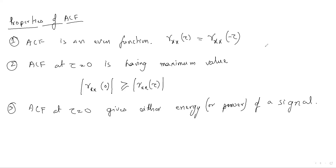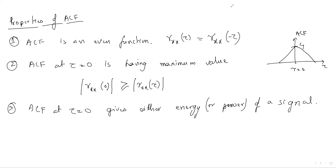An important point is that at τ=0, the autocorrelation function gives the energy or power of the signal. For example, if a plot of the autocorrelation function is given and the maximum value at τ=0 is 4, then you can directly say the power of the signal is 4. This is a very important property: the value of the autocorrelation function at τ=0 gives the power or energy of the signal.